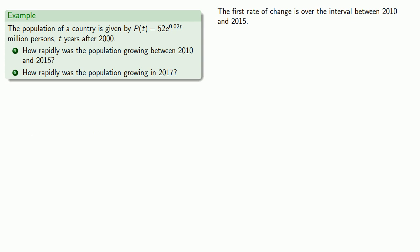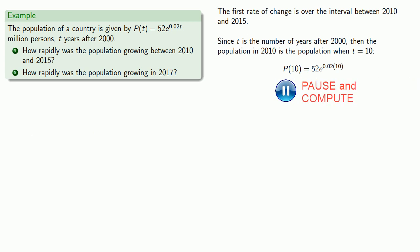Since t is the number of years after 2000, the population in 2010 is the population when t equals 10. We'll substitute t = 10 into our function and evaluate it. We get a value of 63.513 million persons.